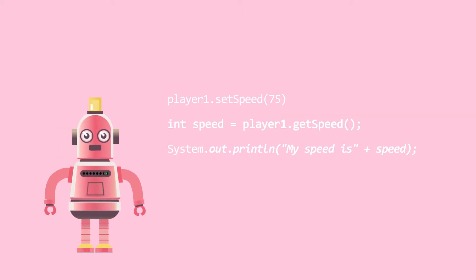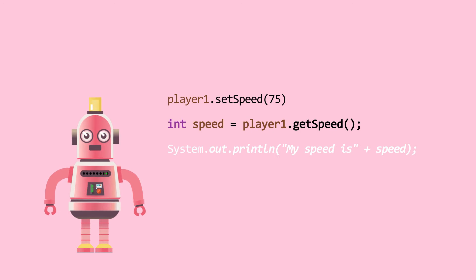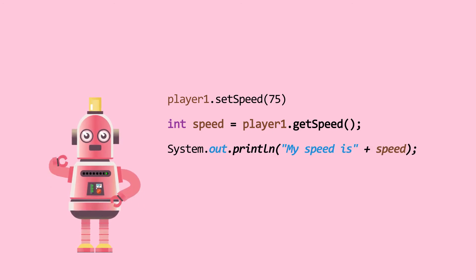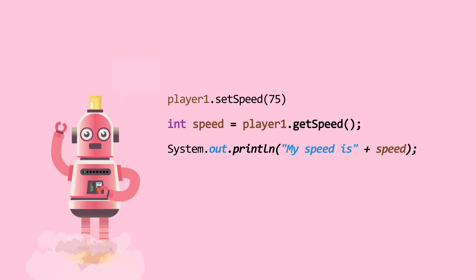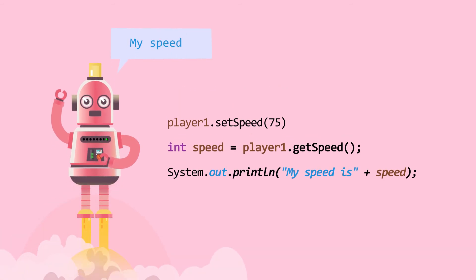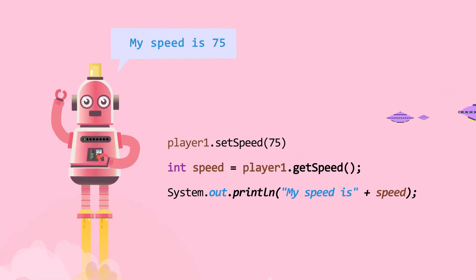Ada uses her special speed button and upgrades her speed from 60 to 75. So let's set speed to 75 and assign it to variable speed. Print it — My speed is 75.